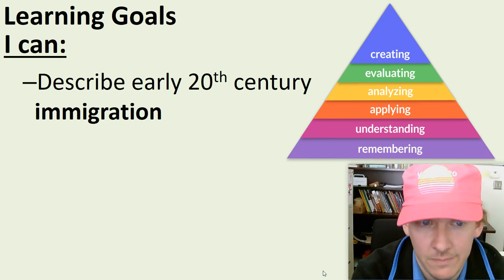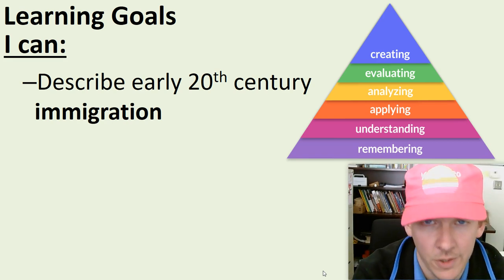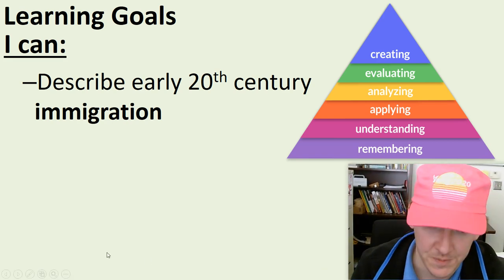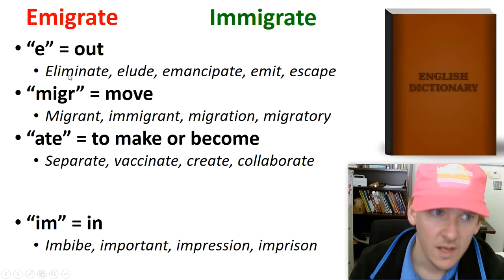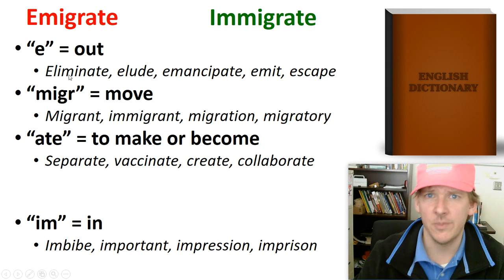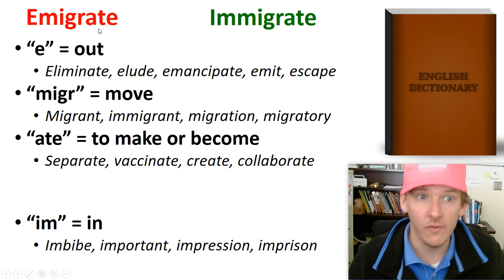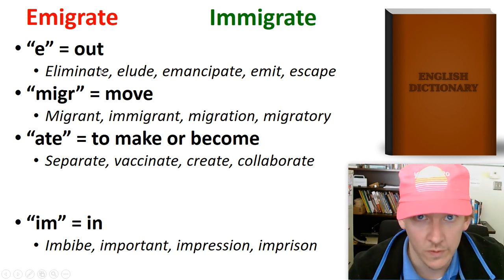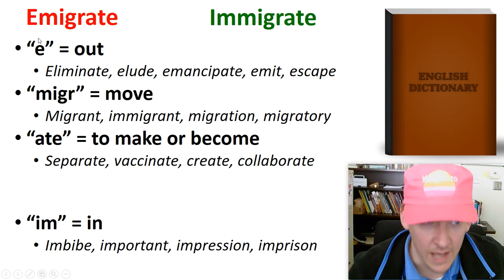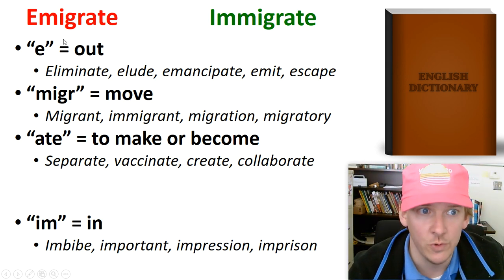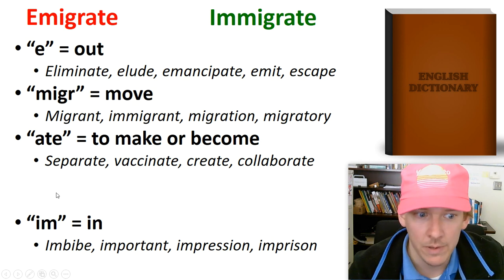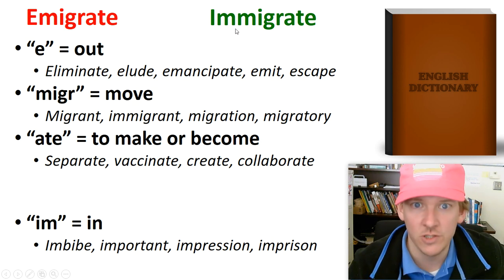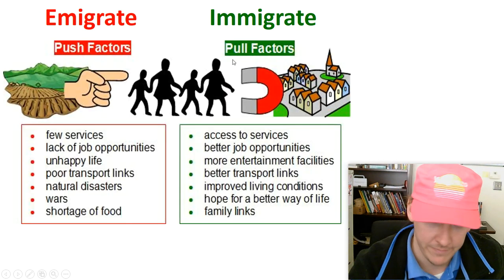I can describe early 20th century immigration. 'E' as a prefix at the beginning of a word means 'out,' and migrate means move, so emigrate means to move out. Immigrate — 'im' means 'in' — so it means to move in.